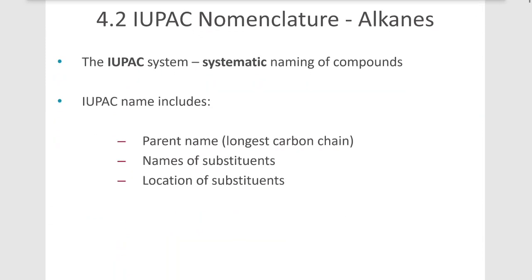The IUPAC system — the International Union of Pure and Applied Chemists — came up with a systematic way of naming organic molecules. That includes identifying the parent chain, or the longest continuous carbon chain in the molecule; then identifying the things hanging off that chain, which are called substituents, and naming those; then assigning a locant, meaning we number them; and then assembling the name. We're going to look at how to do all of that in this video.